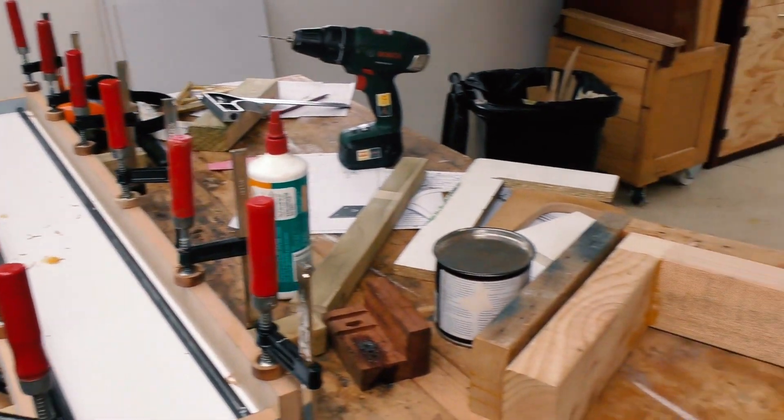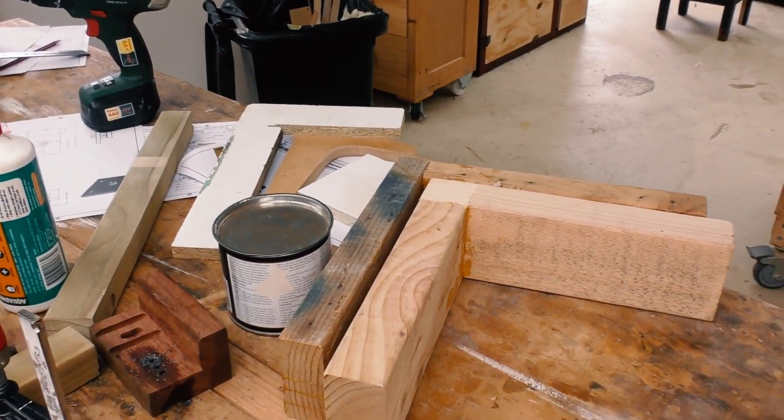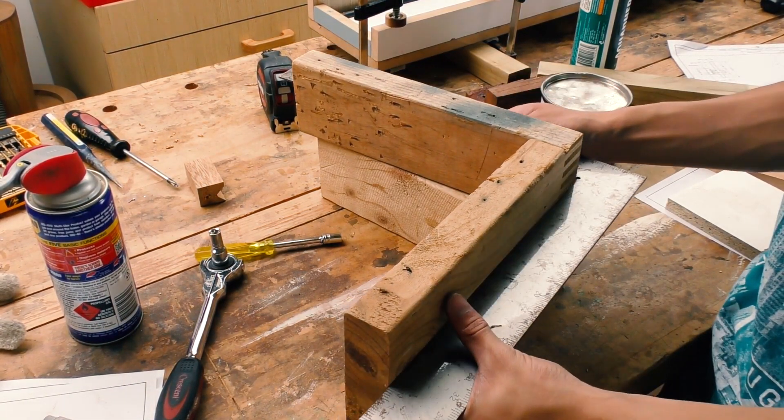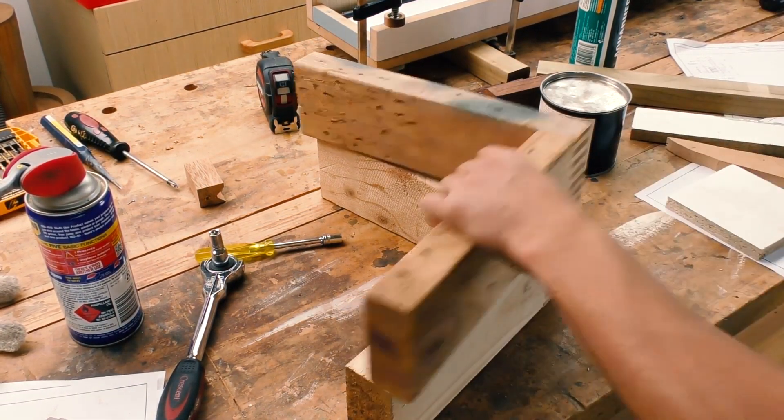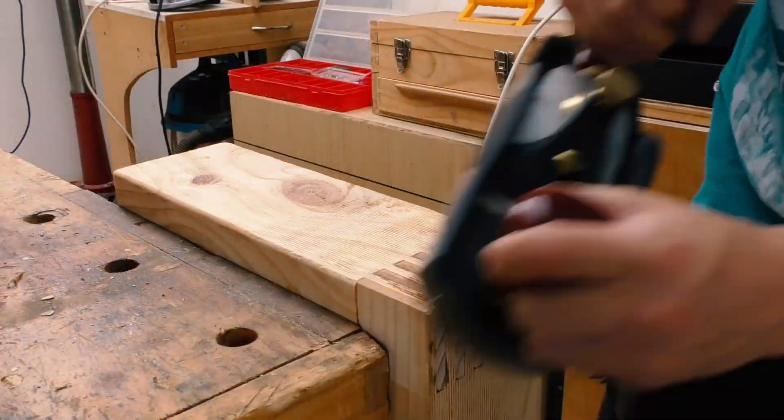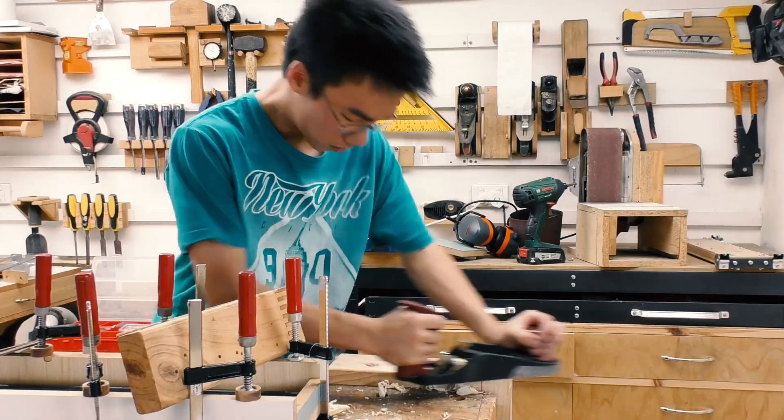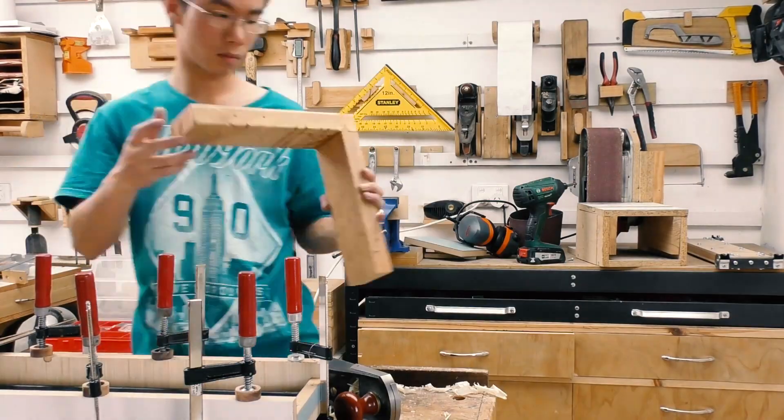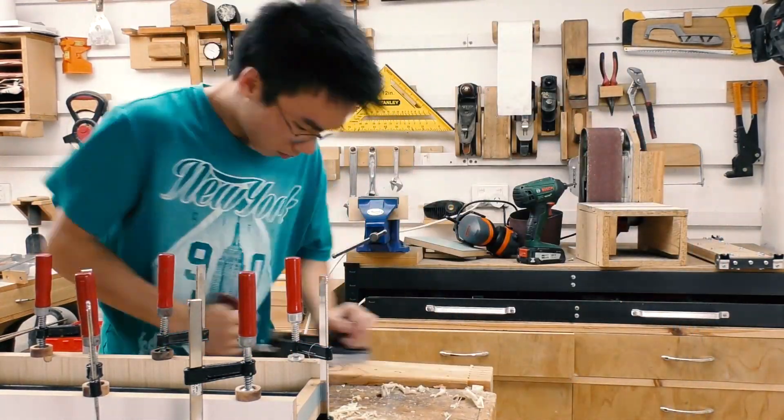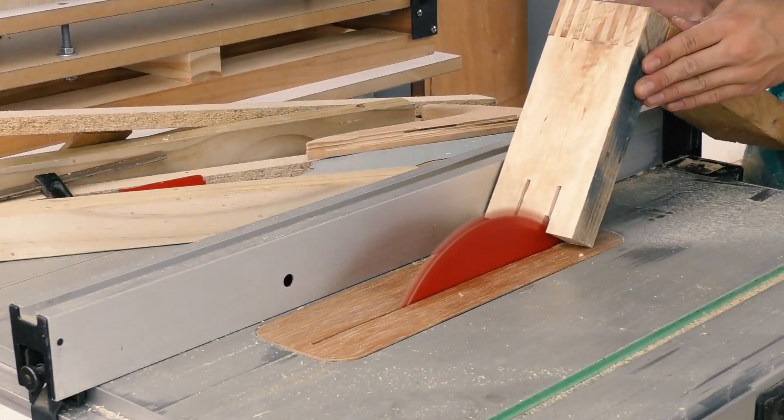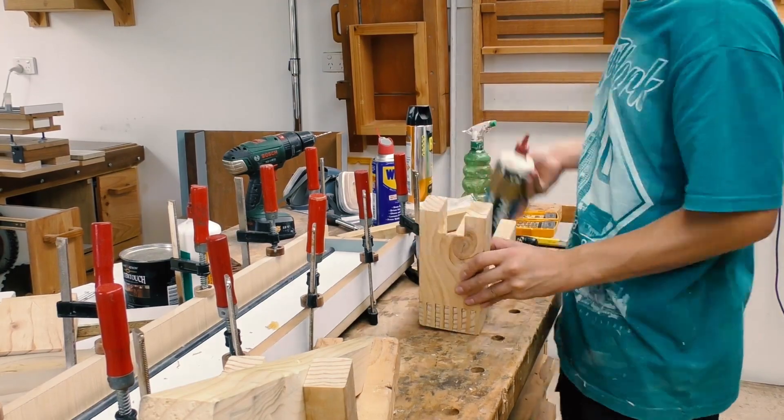While the glue dries, I'm going to make a few modifications on the L brackets. First of all, I got to make sure that they are somewhat square. Alright, this one has some pretty big problems. I'll try adjusting it using a hand plane, then I can cut them a bit shorter and reinforce it by adding a brace.